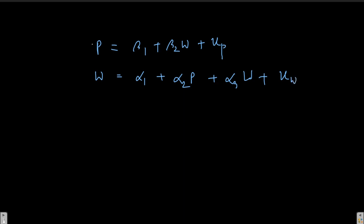The first equation says that price rate is dependent on wage rate. An economist would think of it this way: if the wage rate is increasing, people will have more money at their disposal, so they can buy more things. The moment you can buy more things, there will be more demand in the market relative to supply, and then the price will increase. So essentially the wage rate is influencing the price rate.